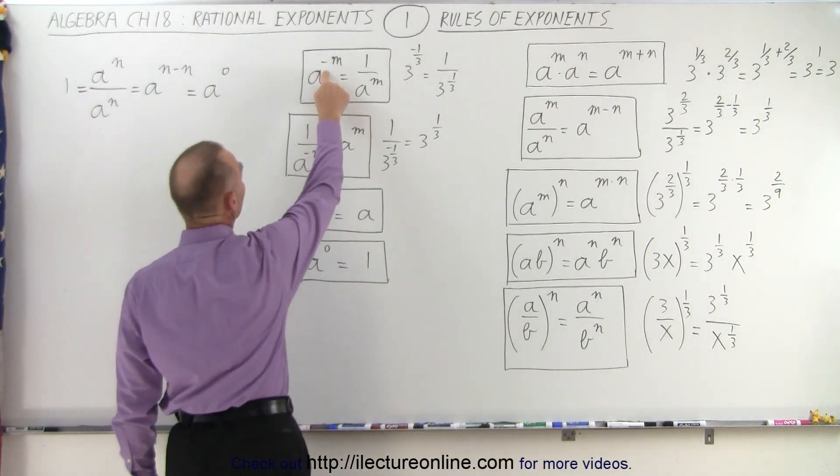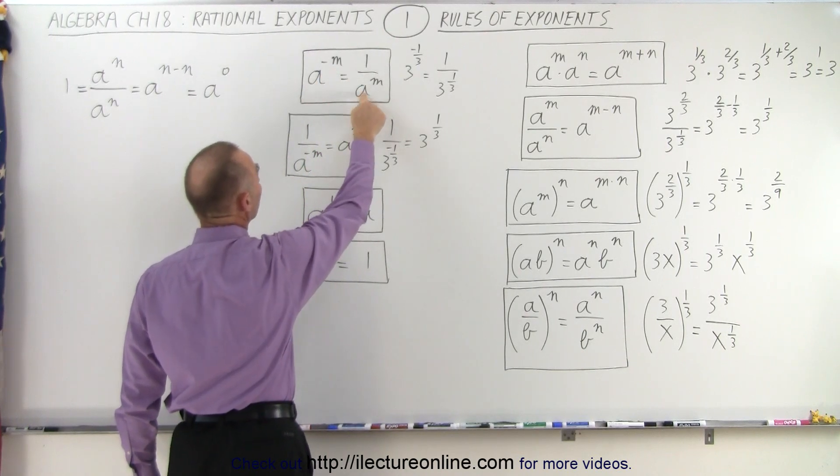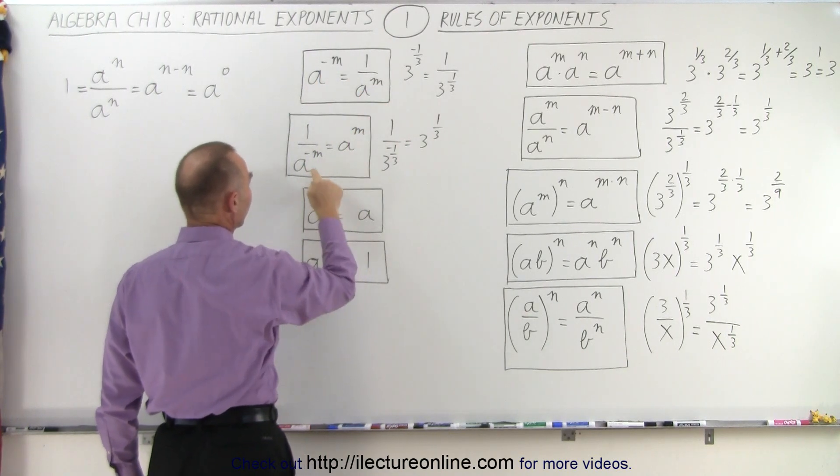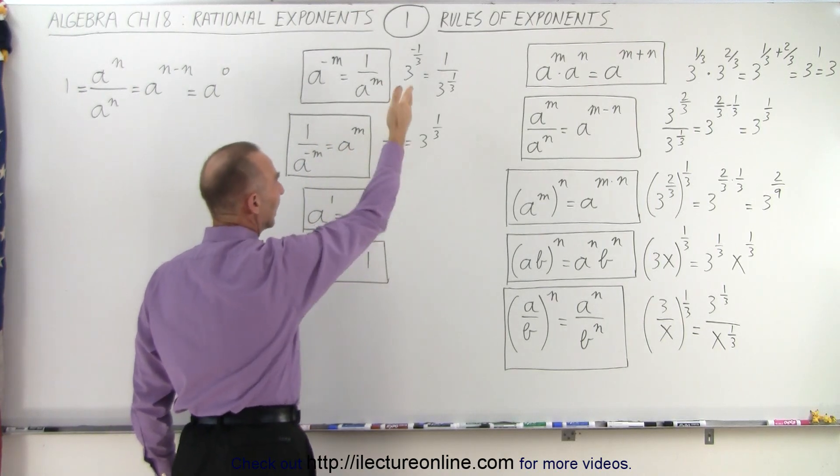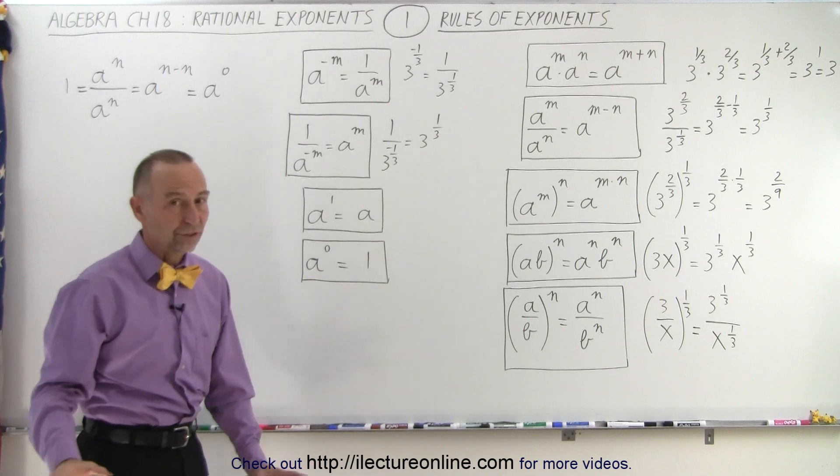Then here, when we have negative exponent, we can write that in the denominator with a positive exponent. Or if we have a negative exponent in the denominator, we can write in the numerator with a positive exponent. And again, with rational exponents, it works exactly the same.